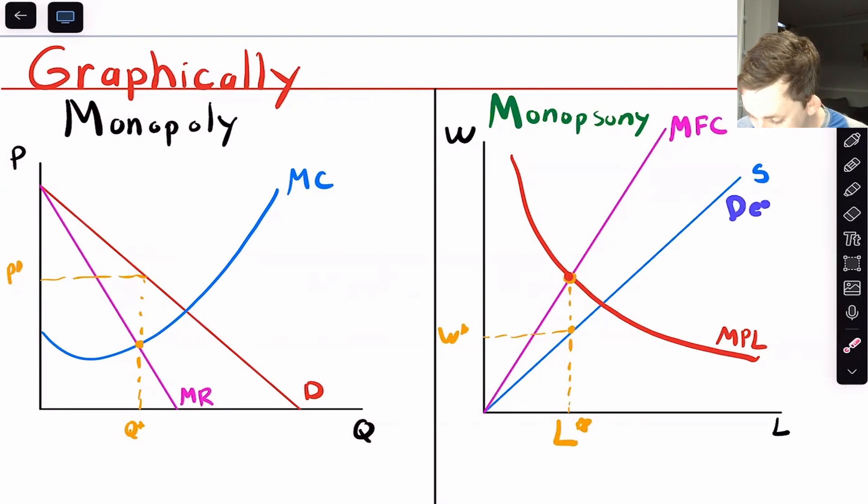We're going to follow this point down to the supply curve, down to how many people want to work at this wage. And that is the wage that we are going to pay in the market. This distance right here represents the fact that we have market power. So we're going to pay this equilibrium wage right here and we're going to have this many workers.